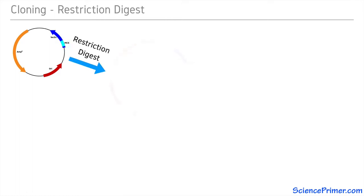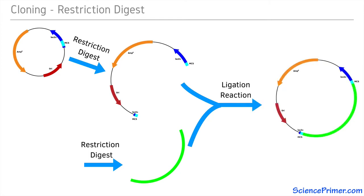This is done by cutting the vector with restriction enzymes that linearize it in the polylinker region. The target DNA is also cut with restriction enzymes so that it has ends compatible with the ends in the vector. The two fragments are then combined using DNA ligase.